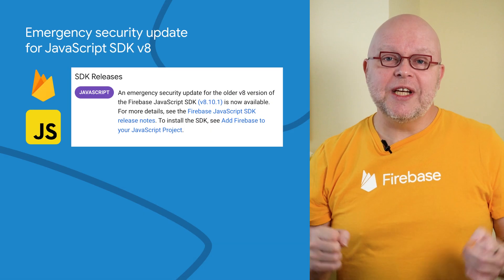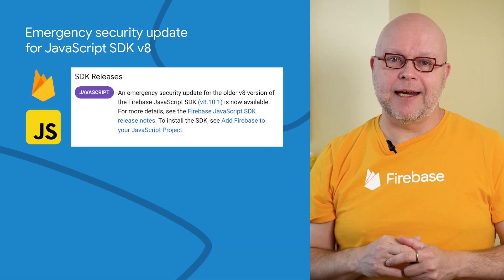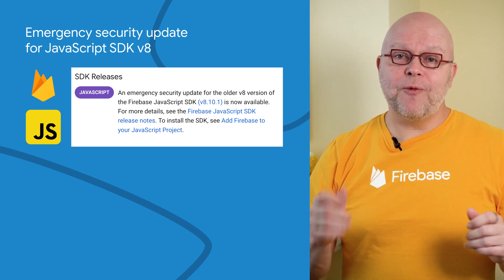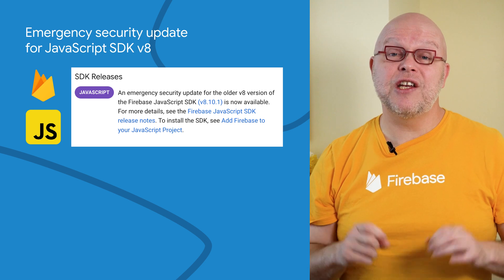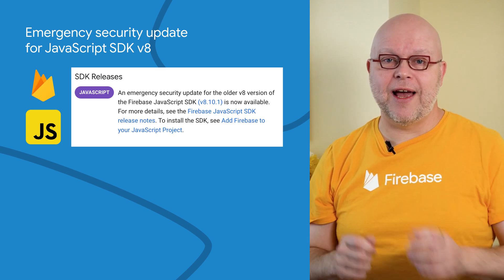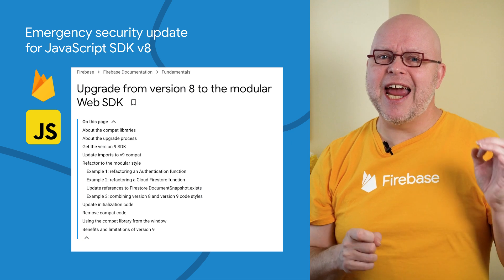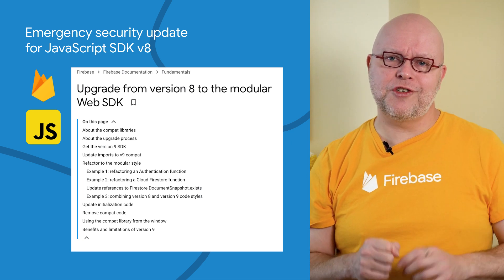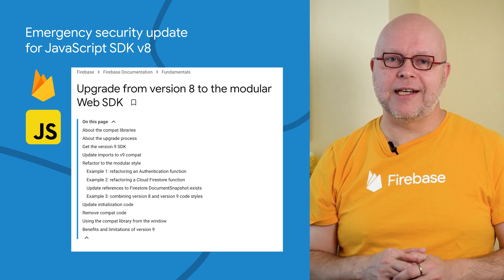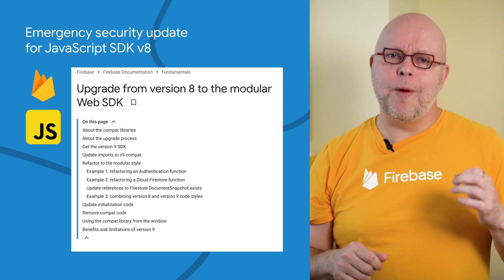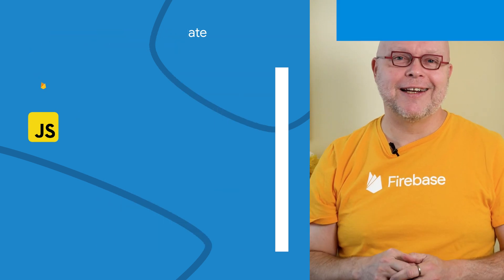We just released an emergency security update for version 8 of our JavaScript SDK. This release upgrades the node-fetch dependency to address security issue CVE-2022-0235. This is also a good reminder that the V8 SDK is updated only for such emergency security fixes and does not benefit from any other updates. So whenever possible, upgrade to the latest V9 version of the SDK by following this upgrade guide.